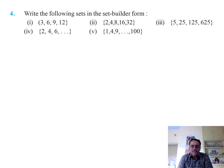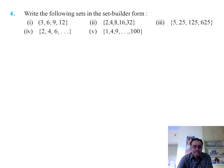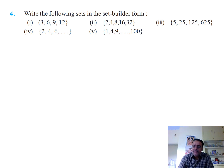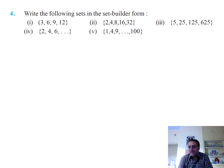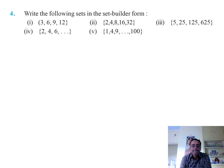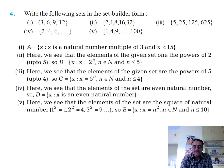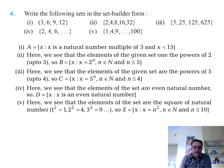The next set is {1, 4, 9, ...} — these are all square numbers. We can write this as {x : x = n², where n is a natural number and n ≤ 10}. You can note down the answers by clicking the pause button.